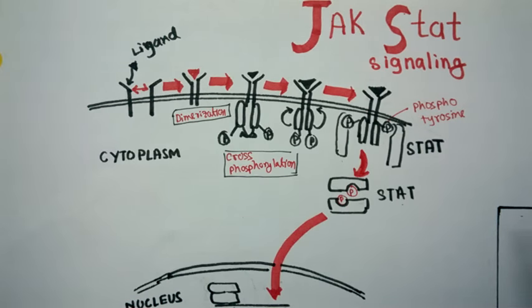In this video, we are going to discuss the JAK-STAT signaling pathway, which is particularly important in the context of immunology. JAK stands for Janus kinase, named after the Greek god of transition. These kinases are associated with cell signal transduction pathways.